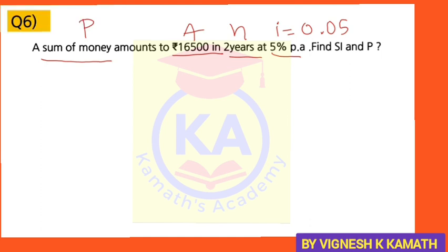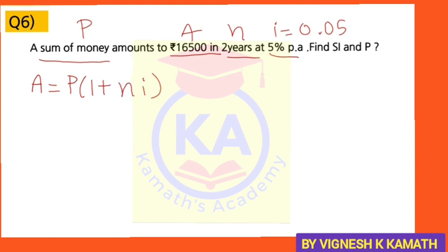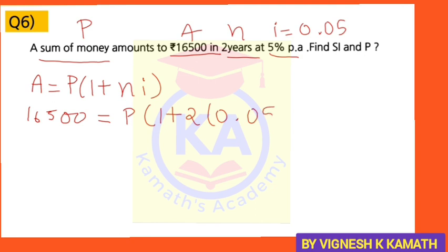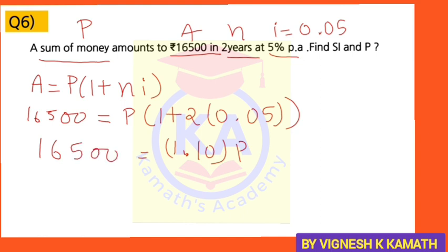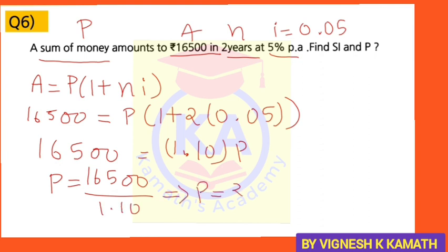Using the amount formula A = P × (1 + NI): 16,500 = P × (1 + 2 × 0.05). Solving: 0.05 × 2 plus 1 equals 1.10, so 1.10P = 16,500. Solving for P: 16,500 divided by 1.10 gives the value of P as Rs. 15,000.